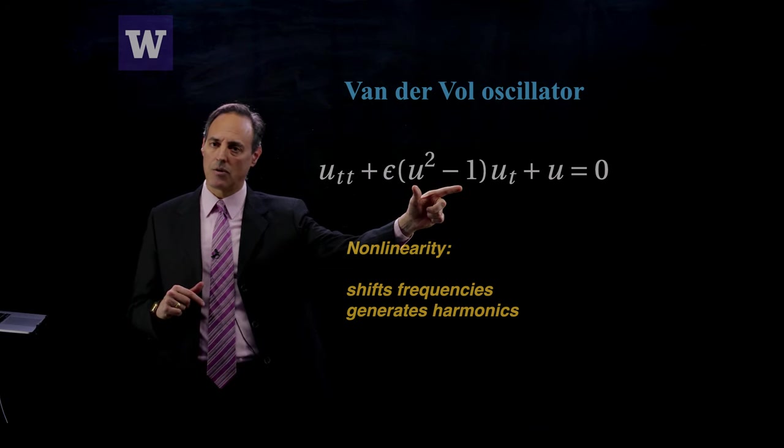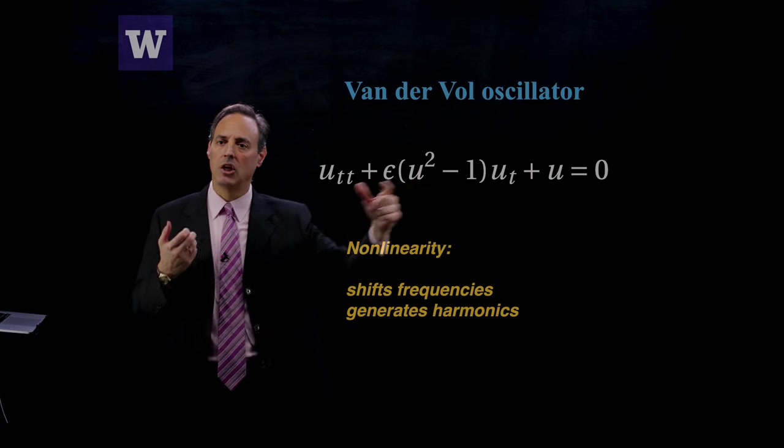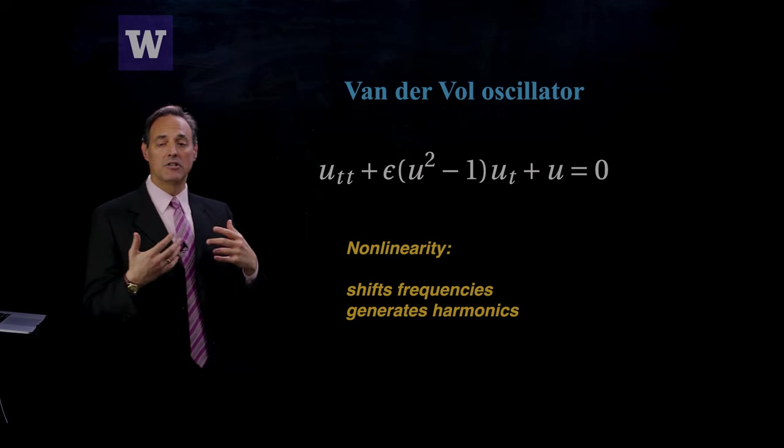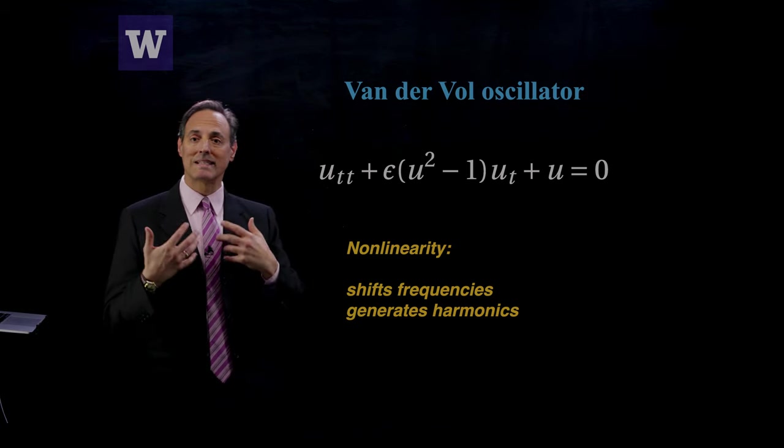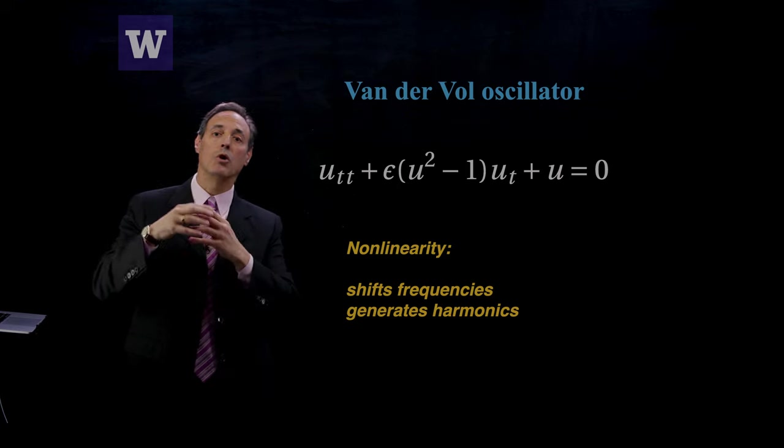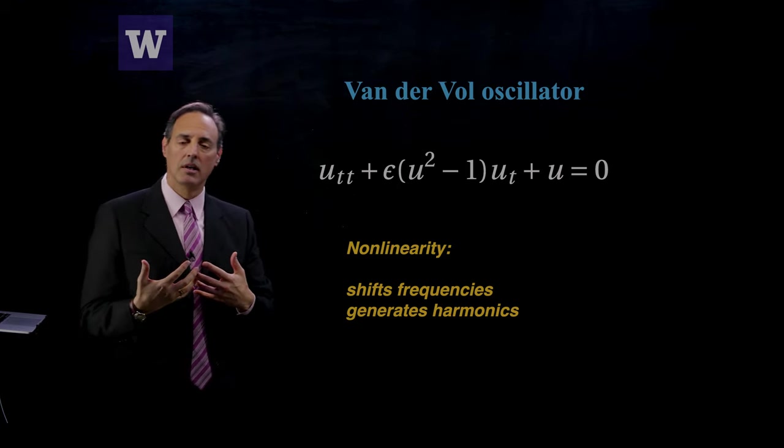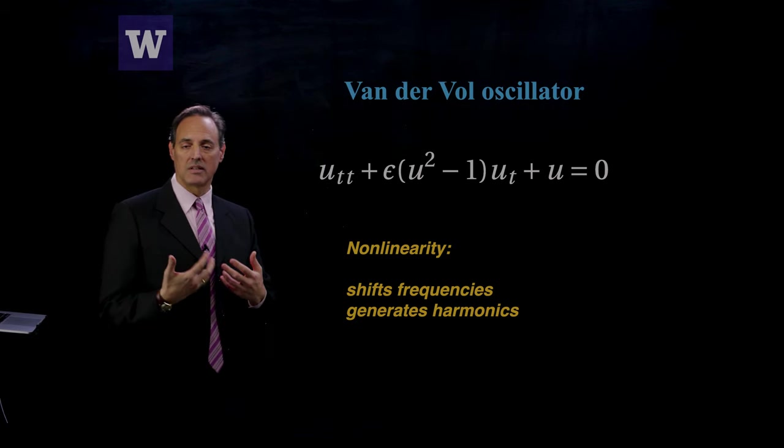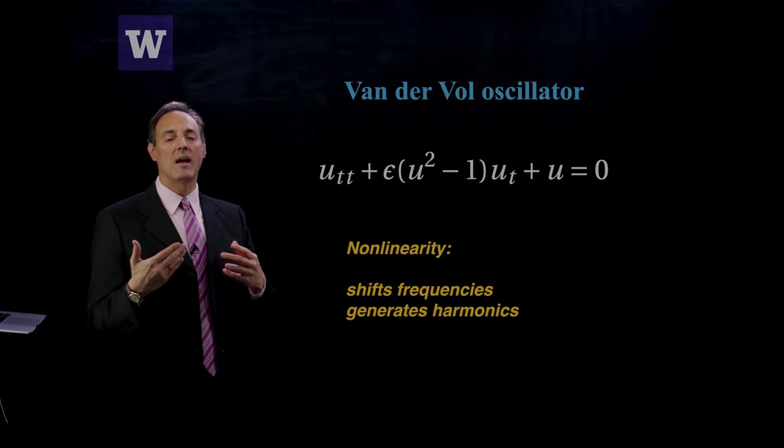If u is less than one this is negative and this is an amplification effect. What tends to be exhibited in the van der Pol oscillator are limit cycle behaviors. If the amplitude is too big it decays, if it's too small it grows, and you end up getting an oscillatory behavior which persists in this system.